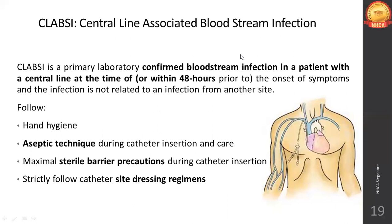If the dressing becomes damp, loosened, or visibly soiled, the dressing should be replaced. For short-term CVC sites, change the dressing every two days with gauze, or every seven days if using transparent dressing, unless soiled earlier. In pediatric patients, the frequency of dressing changes is higher.